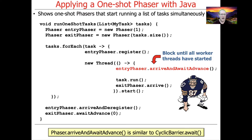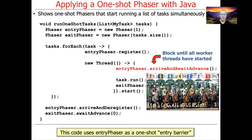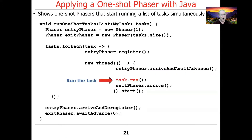The arriveAndAwaitAdvance method on a phaser is actually very similar to the await method on a CyclicBarrier. In essence, we're using the entry phaser as a one-shot entry barrier — nobody gets to run until all the threads are at the starting gate, ready to get started. Once everybody's ready to go, each of the threads will be released. They'll return from arriveAndAwaitAdvance and each call task.run(), which will do its thing.